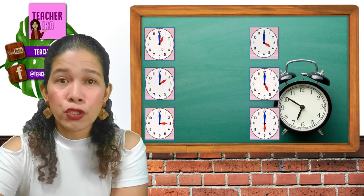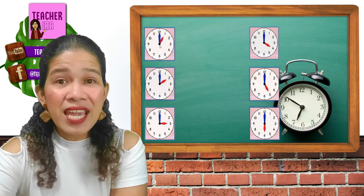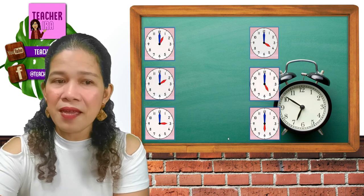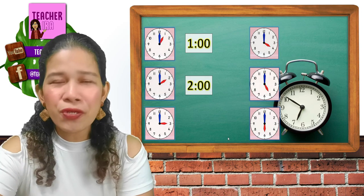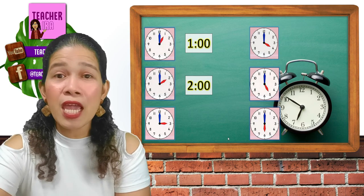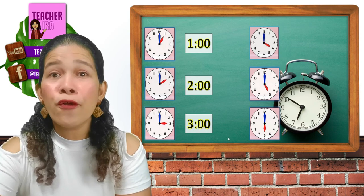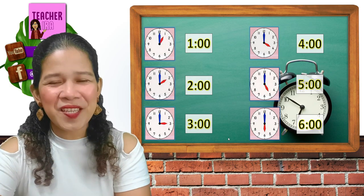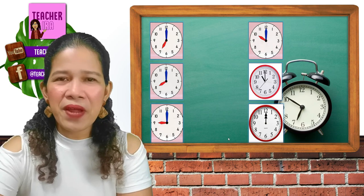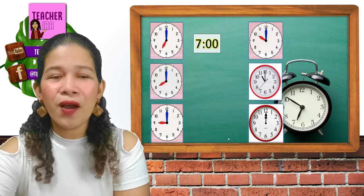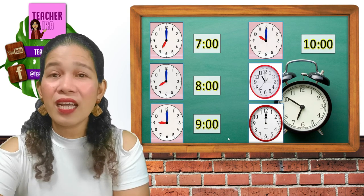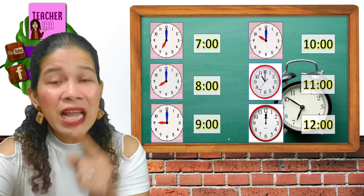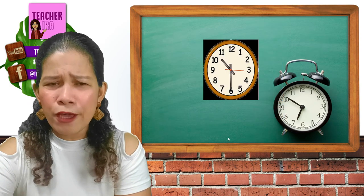Let us have more examples. Look at this — the short hand is at number 1 and the long hand is at number 12, so we say o'clock. Let's read the short hand first: 1 o'clock. Very good! Next: 2 o'clock. How about the next one? Yes, that's 3 o'clock. Next: 4 o'clock and 5 o'clock, 6 o'clock. We also have 7 o'clock, 8 o'clock, 9 o'clock, 10 o'clock, 11 o'clock, and 12 o'clock. Wow, great time reading kids!